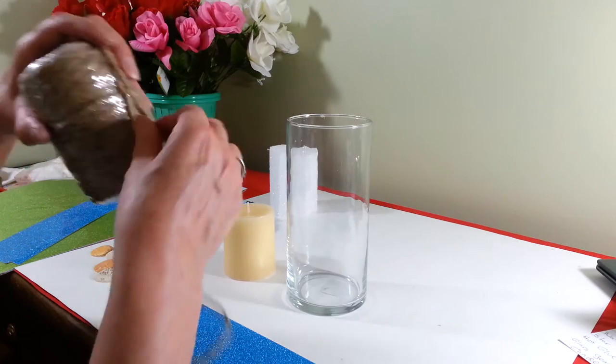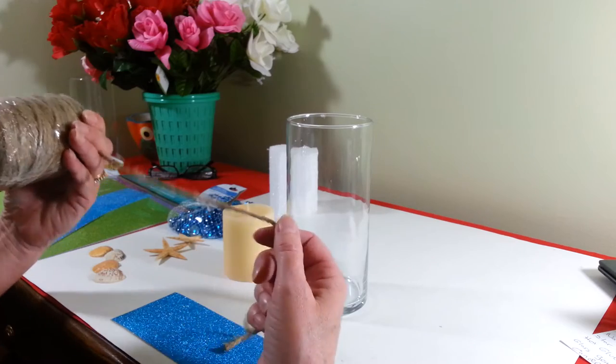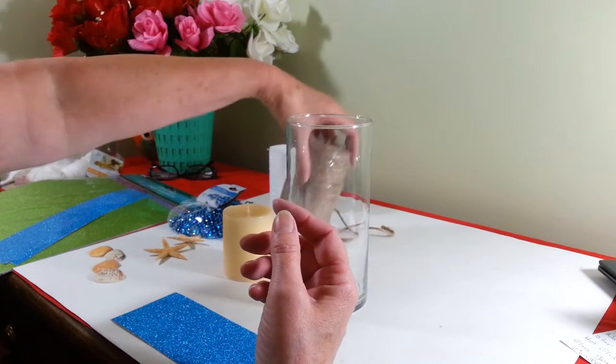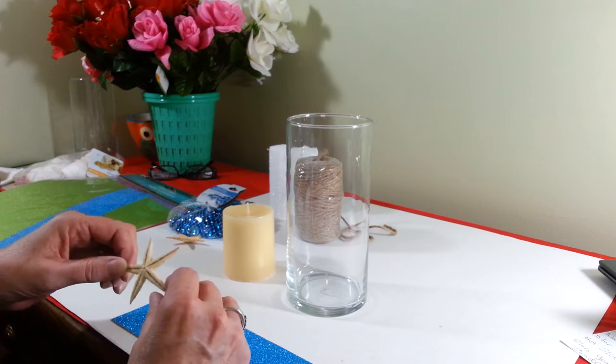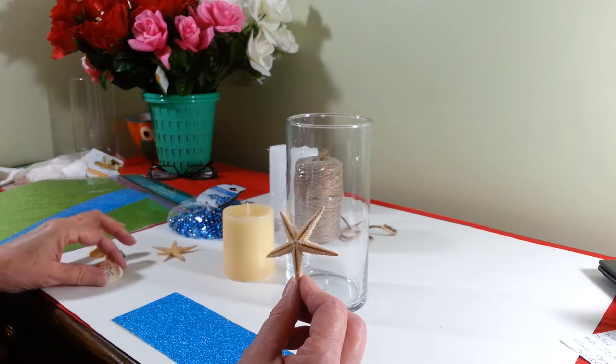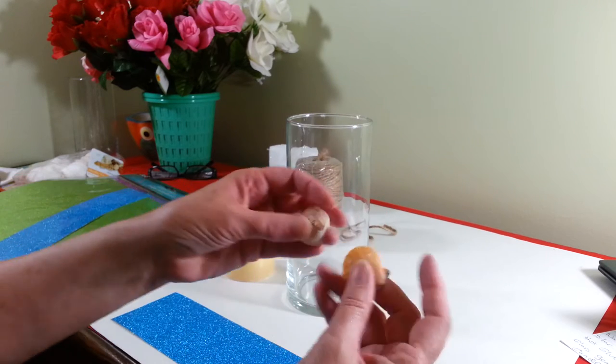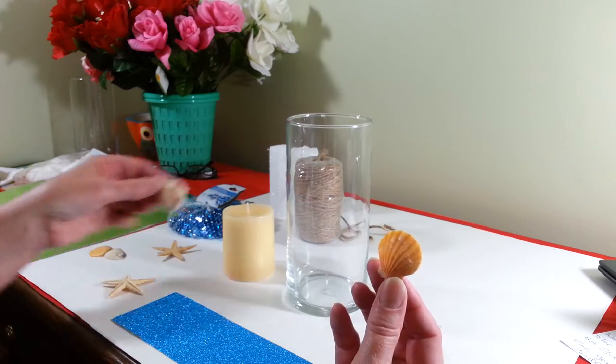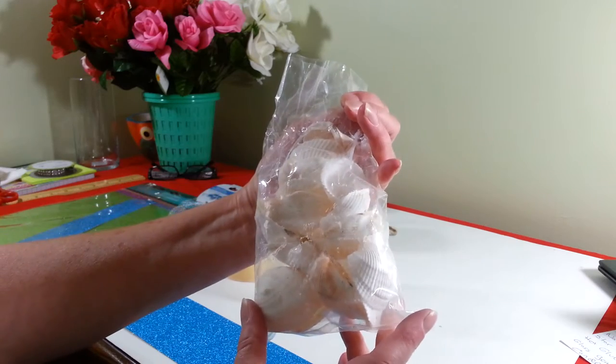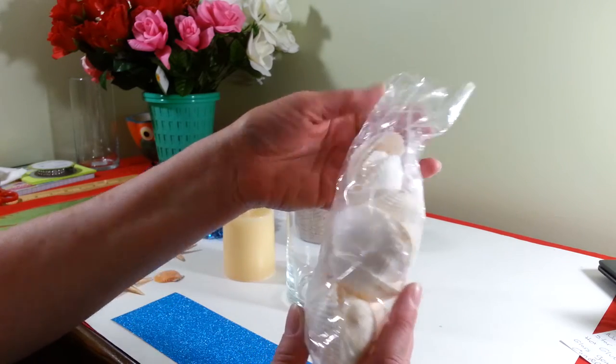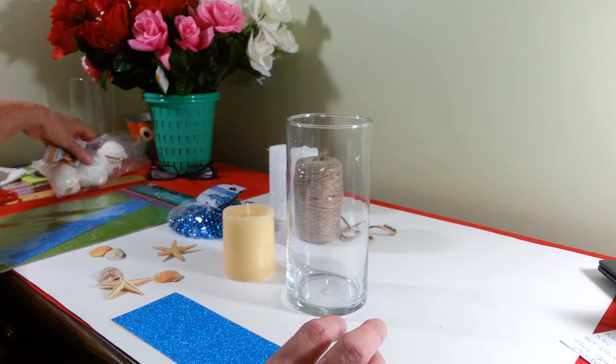I purchased some jute string. I believe I purchased this at Walmart because the one at the Dollar Tree was just a little too thin for what I wanted for this project. I have some starfish and some shells that I purchased at my local craft store. They had these shells at the Dollar Tree, but they were just one kind of shell and they were a little bit too big for this project.